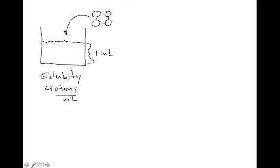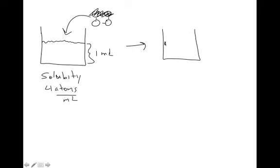Let's say I put two atoms in there instead of four. What I would have is a beaker with two dissociated atoms — a positive and a negative. And what I have in my mixture is two atoms per milliliter.